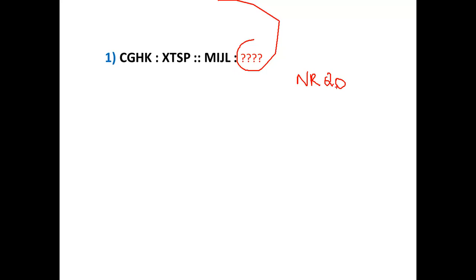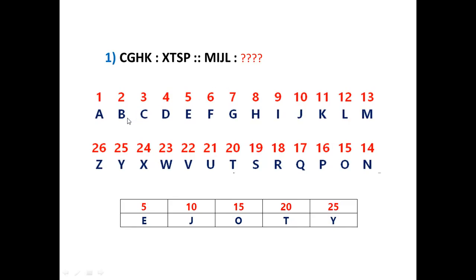How come? It seems very difficult, right? Actually it is a very easy question. I will give you tips on how to solve these kinds of problems easily. First of all, we need to remember this table. A for 1, B for 2, C for 3, up to the given number — maintain this table.